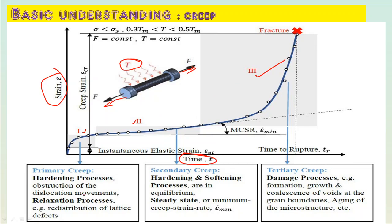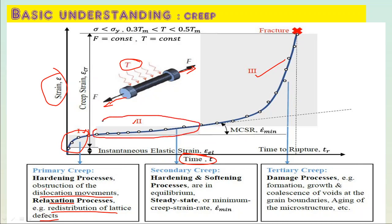In primary creep, deformation starts at the microstructural level. The hardening process causes obstruction of dislocation movement and a relaxation process — for example, redistribution of lattice defects. This happens at the lattice and crystal level where the hardening process takes place. After instantaneous elastic strain, we enter secondary creep, where hardening and softening processes are in equilibrium — a steady-state minimum creep strain rate.